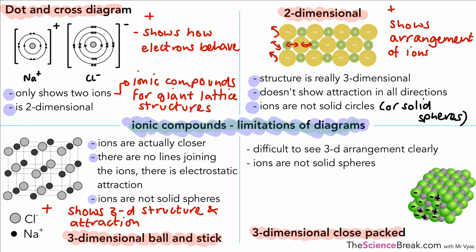We can go one step further with our three-dimensional close packed diagram, which looks a bit like that. Now this is very useful. It shows again the 3D structure, that the ionic compound is a giant lattice and not just a flat structure. You can also imagine that we've got attraction in all directions.